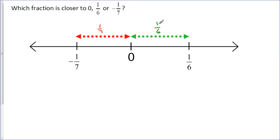So, this is how far one-sixth is away from zero. This is how far negative one-seventh is away from zero. It's just a matter of figuring out which of these two fractions is bigger. Well, one-seventh is one out of seven pieces. Seven pieces means each piece is smaller. So, this guy is smaller of the two. So, that means this guy is closer to zero.